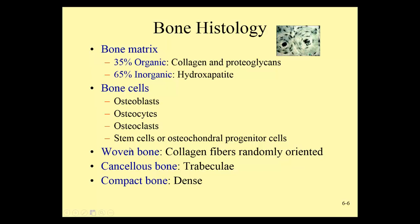There are three types of bone. Woven bone is a very fragile, newly made bone where collagen fibers are not oriented in any particular way; it's only found during early bone development. Cancellous or spongy bone has a spongy appearance with thin bony fibers called trabeculae. Compact bone is solid bone with no open spaces — very, very dense.